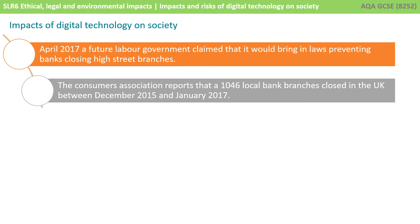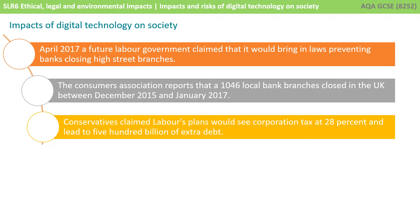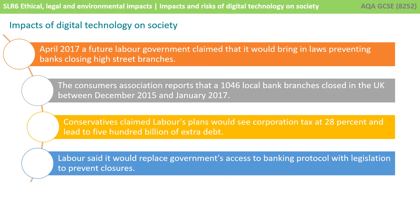The Consumers Association reports that 1,046 local branches closed in the UK between December 2015 and January 2017. The Conservatives claimed Labour's plans would see corporation tax at 28% and lead to 500 billion pounds of extra debt. Labour said it would replace the government's access to banking protocol with legislation to prevent closures.